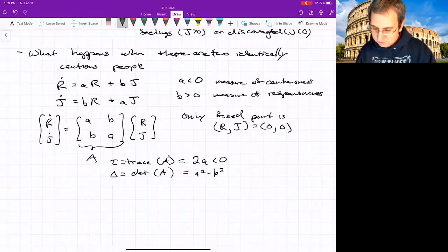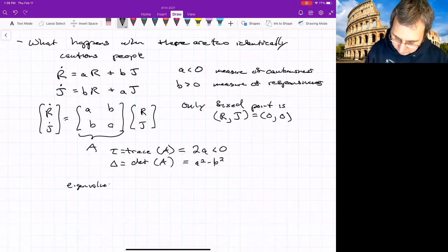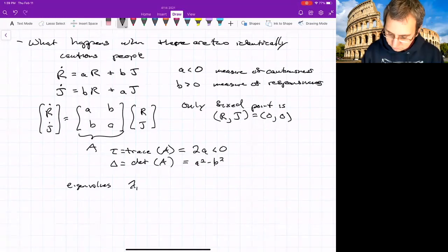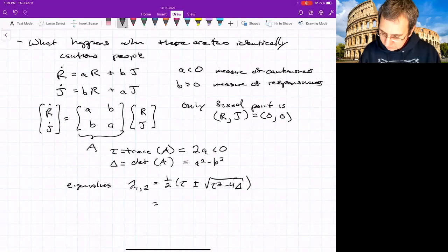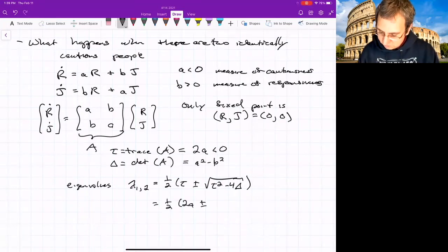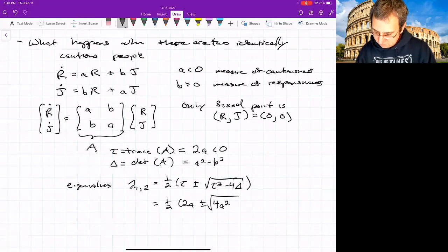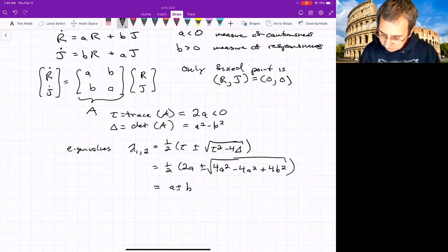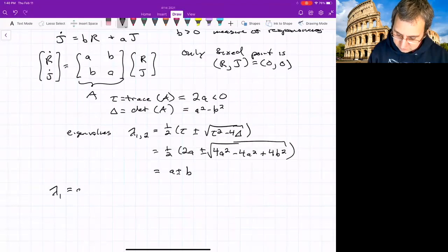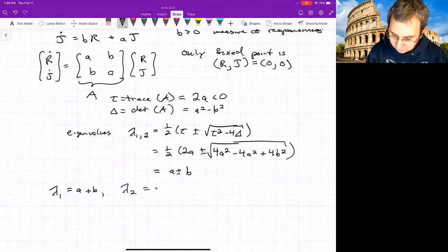So we don't know if that's positive or negative yet. If we get the eigenvalues, right, the eigenvalues were, we have 1 half tau plus or minus tau squared minus 4 delta. And just plug these things in. So we have 1 half 2A plus or minus square root 4A squared minus 4A squared plus 4B squared, which means we have A plus or minus B. We'll say lambda 1 is the one that's A plus B, and then lambda 2 is A minus B.